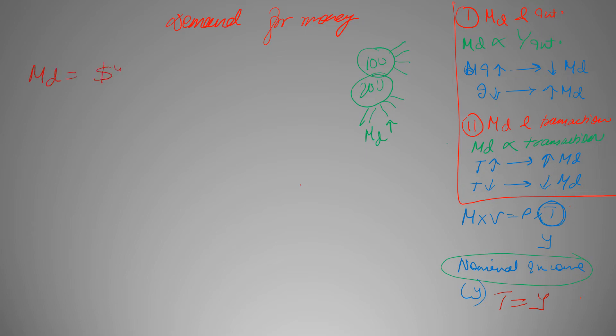It's MD is equal to $YL(I) with this negative sign over here. Now this MD denotes money demanded, this $Y shows the nominal income, and the L(I) shows liquidity due to interest with this negative sign showing the inverse relation.